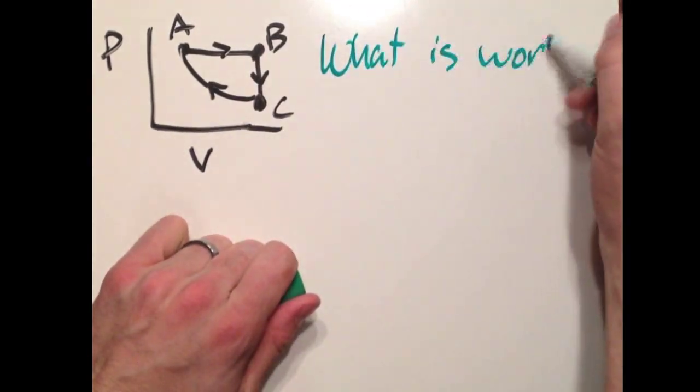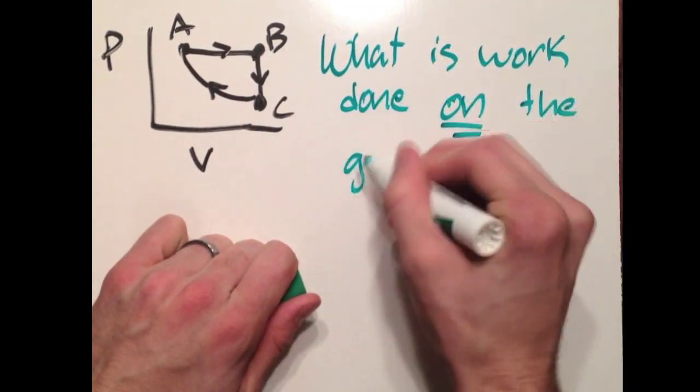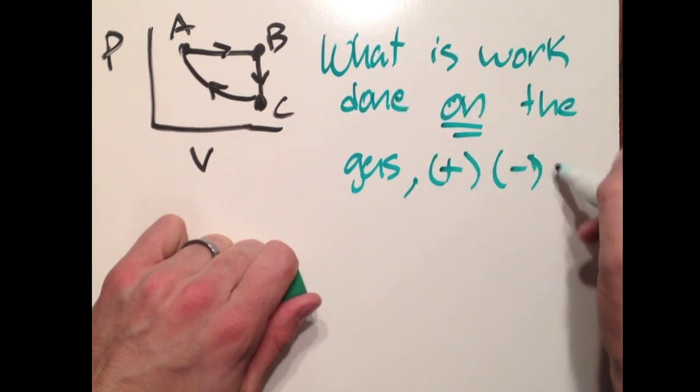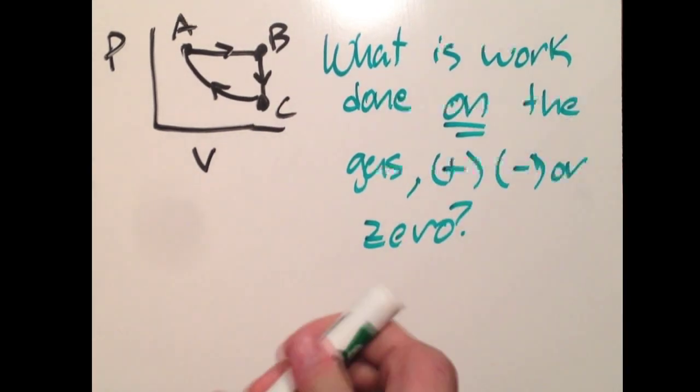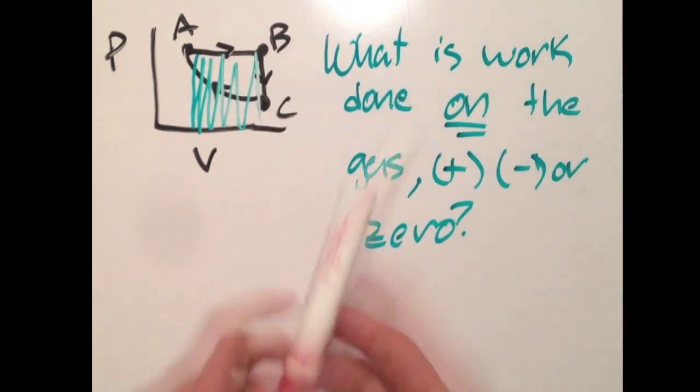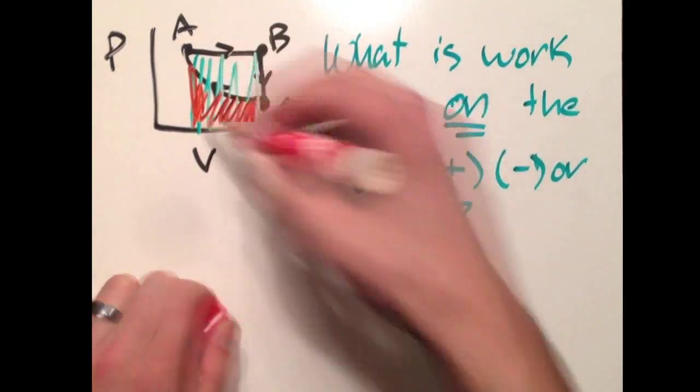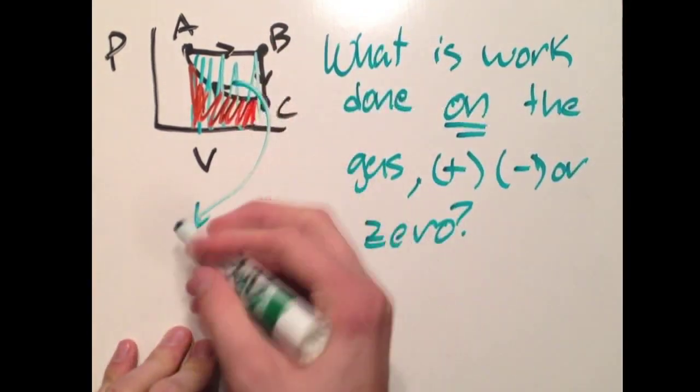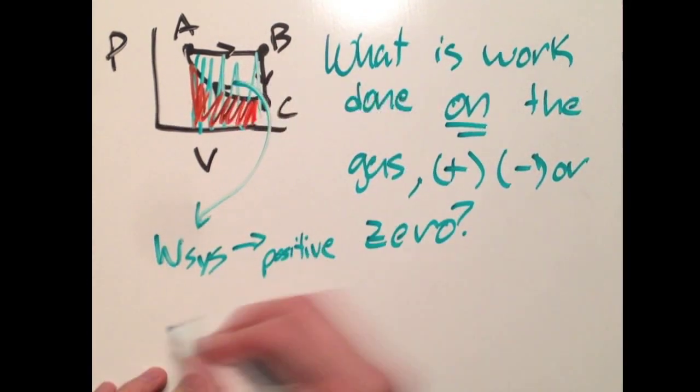Let's take a look at another PV diagram that has a complete cycle from A to B to C and then back to A. I want to know if the work done on the gas is positive, negative, or zero. When I'm asking this, I'm asking you for the work done by the surroundings. So the area under the curve from A to B, I have a volume increase. From C to A, I have a volume decrease. From A to B, that is the work done by the system.